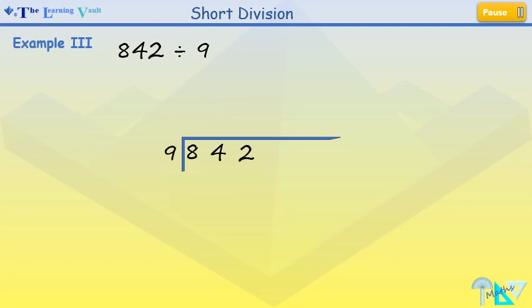Now, 8 divided by 9 can't go. So, we'll place a 0 above and carry the 8 to the 4 to make it 84. Now, 84 divided by 9 is 9 with a remainder of 3, which makes this now 32. Now, we've got 32 divided by 9, which will give us 3 with a remainder of 5.